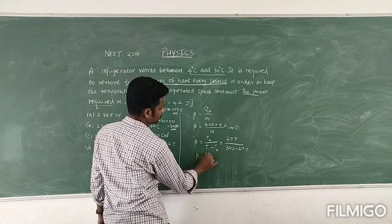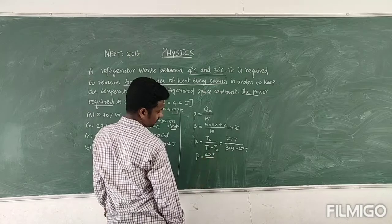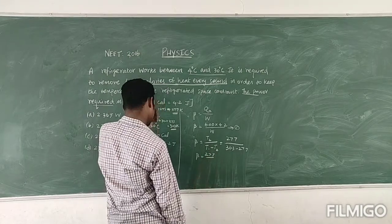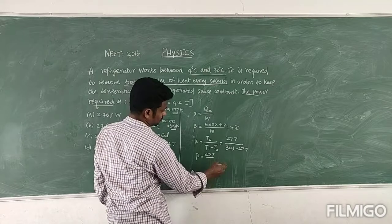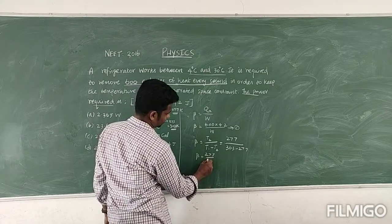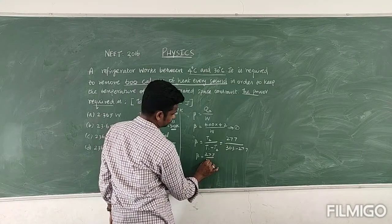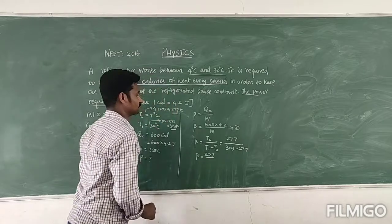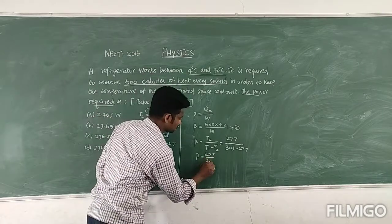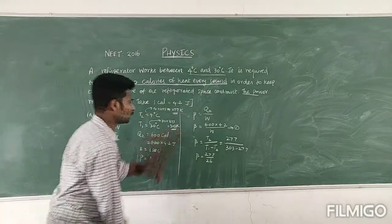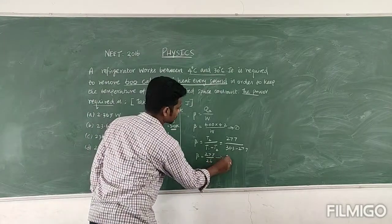Therefore beta is equal to 277 divided by this, you know that, so that is 26. Now this is taken as equation number 2.